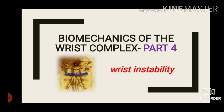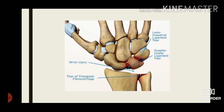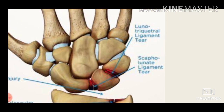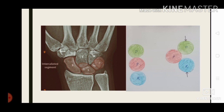Welcome to Human Be. In this video we are going to discuss wrist instability. In the previous videos we discussed wrist ligaments. In the volar aspect of the wrist there are two intrinsic ligaments: the scapholunate ligament, which connects the scaphoid and lunate, and the lunotriquetral ligament, which connects the lunate and triquetrum.